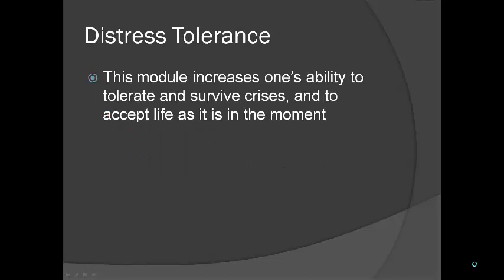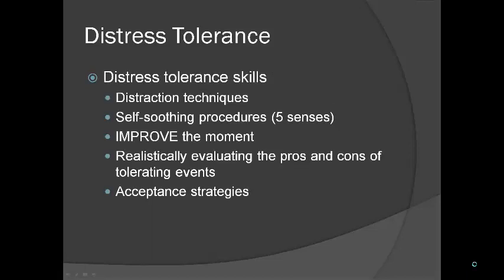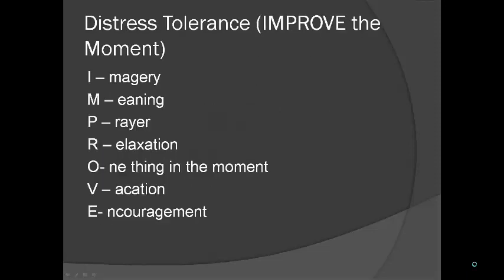Distress tolerance increases one's ability to tolerate and survive crises and to accept life as it is in the moment. Life is going to be painful sometimes — how do we handle that without becoming emotionally destructive to ourselves? Skills learned in the distress tolerance module include distraction techniques, self-soothing procedures, 'improve the moment,' realistically evaluating the pros and cons, and acceptance strategies. 'Improve the moment' is an acronym where you use techniques to tolerate distress — Imagery by going to a happy place, finding Meaning in the situation, Prayer for those for whom that works, Relaxation exercises, focusing on One thing in the moment, doing a mental Vacation, or using self-Encouragement techniques.